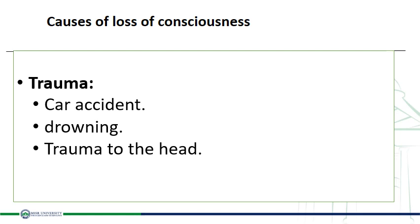إيه اللي بيحصل مع loss of consciousness؟ اللي بيحصل إن الـ tongue falls backward، ويلزق في الـ posterior wall of the pharynx، وبالتالي you obstruct the airway. ده اللي العامة بيقوله عليه 'بلع لسانه'، هو محدش بيبلع لسانه فعلاً، بس هو just falling of the tongue. يبقى نفهم إن opening the airway يعتمد على إني أشد الـ tongue بعيد عن الـ posterior pharyngeal wall.